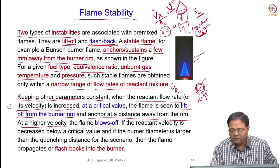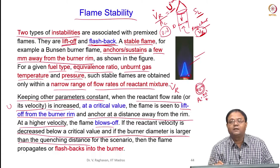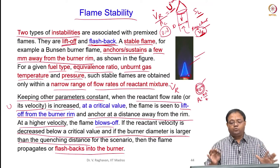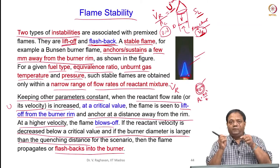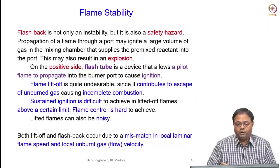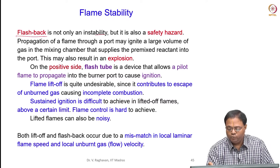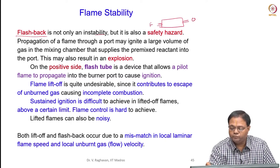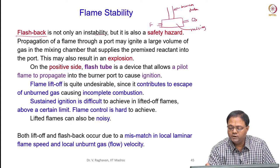On the other hand, the reverse: when reactant velocity is decreased below a critical value and two conditions are met — burner diameter is larger than quenching distance (D > d_quenching) — then the flame can flash back into the burner. These two instabilities are primarily due to the values of U, the average unburnt reactant velocity, and the laminar flame speed SL for the given condition.